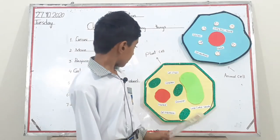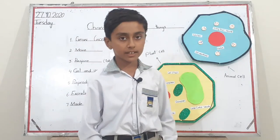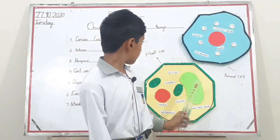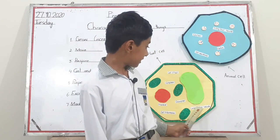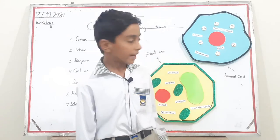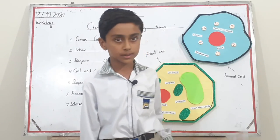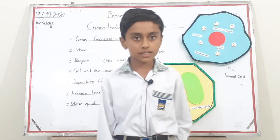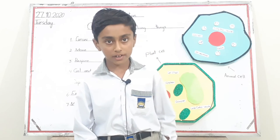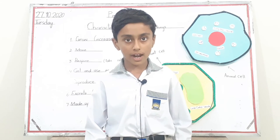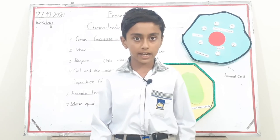Vacuole is present in both cells. In plant cell there is a large central vacuole, and in animal cell there are many small vacuoles. The function of vacuole is that it stores water, food, and waste in plant and animal cell.